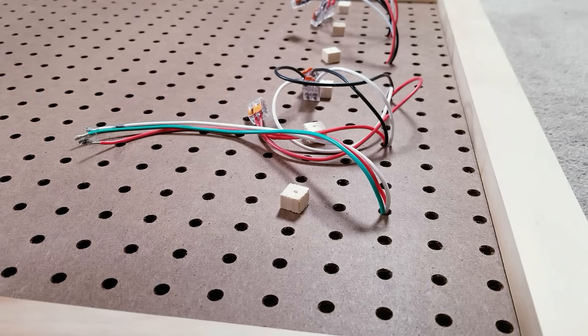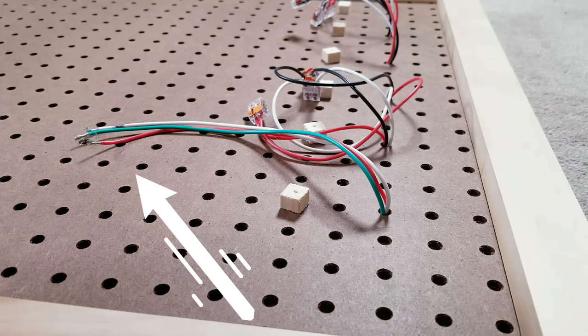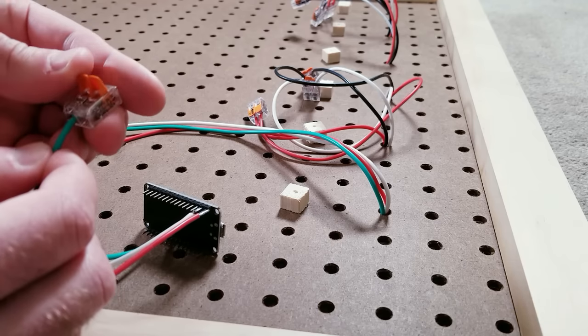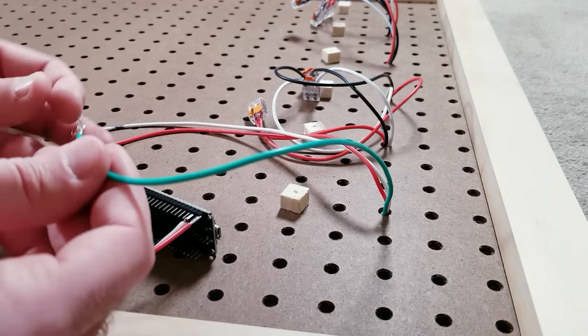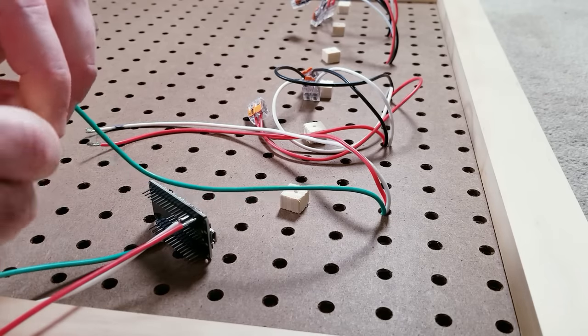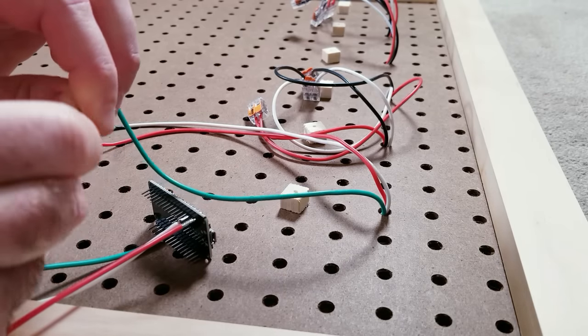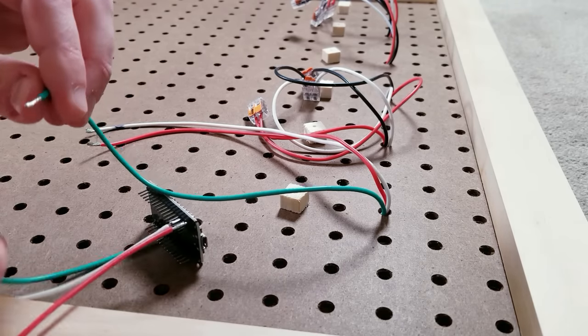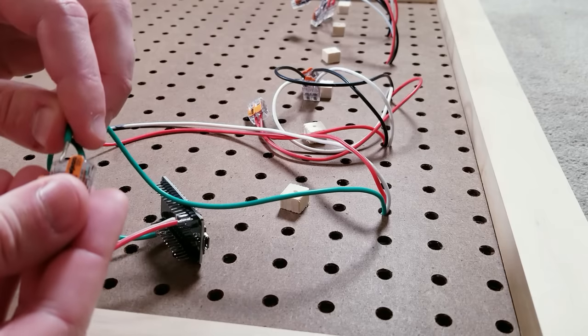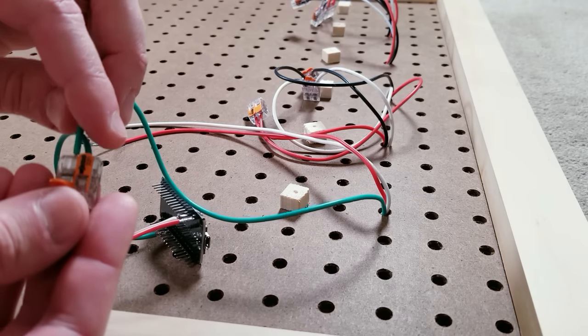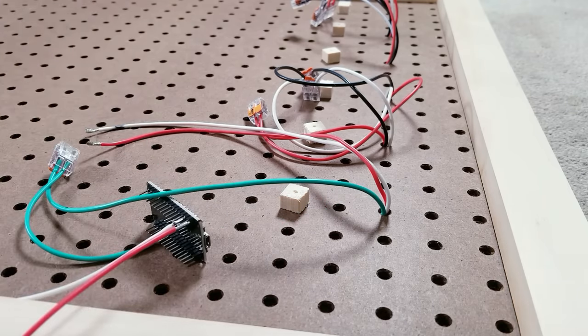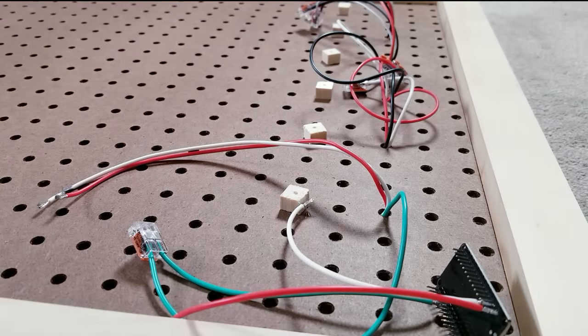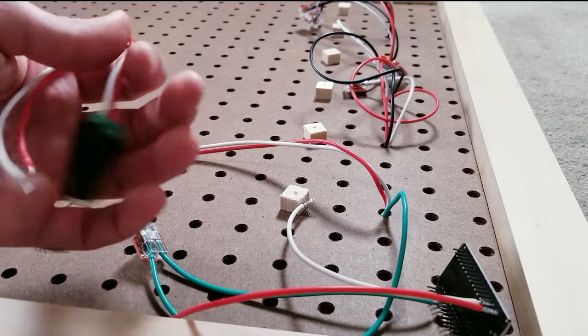To get everything hooked up to the power and controller is super easy. Here you're looking at the three wires at the beginning of the first section. I'm going to take the connector and feed in the data wire from the controller and the data wire from the LED strip.